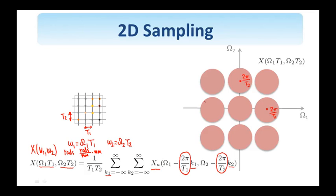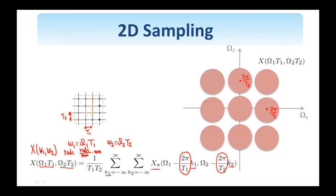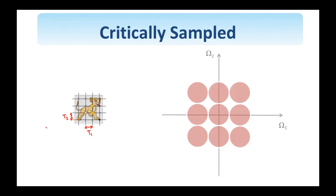In performing sampling, there are two important parameters: the sampling periods T₁ and T₂. They control the spacing of the points in the spatial domain, and they also control how far apart the replicas of the analog spectrum are located in the periodic extension. We say that an analog image is critically sampled if T₁ and T₂ are chosen so that when we find the Fourier transform of the discrete signal — formed by the periodic extension of the analog spectrum — the spectra just touch each other without overlapping.